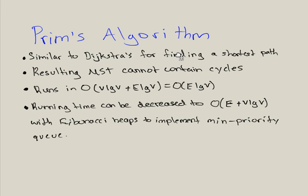And your resulting tree that you get, your minimum spanning tree, cannot contain cycles just like Kruskal's Algorithm. It runs in big O of (E log V), same as Kruskal's, and this running time can be decreased to big O of (E + V log V) if you use Fibonacci heaps to implement the minimum priority queue.